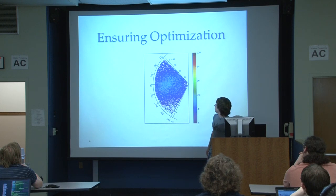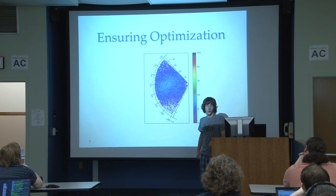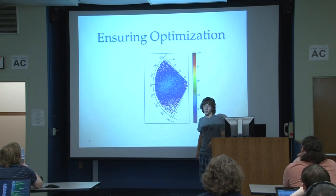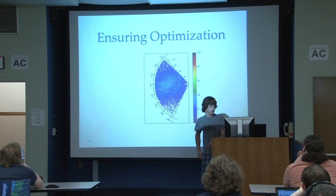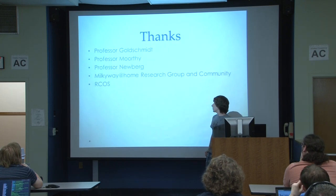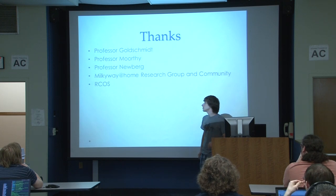All of this stuff looks like it's making sense for now, so it looks like it's optimizing correctly. Right now I'm just going to wait another week or so to see if the other runs I have up come back with the same or a similar answer. Thanks to everyone in our cohort, our professors, and my research advisor for Milky Way at Home and the Milky Way at Home research group. Any questions?